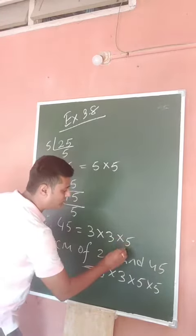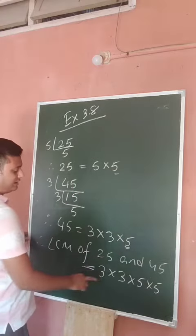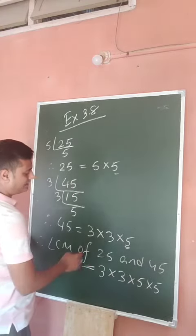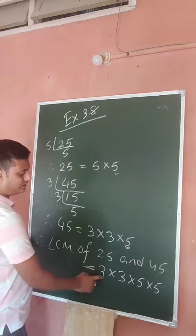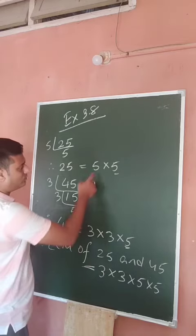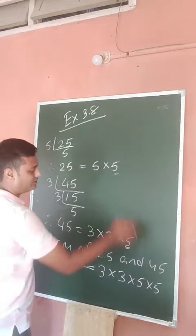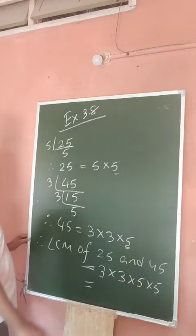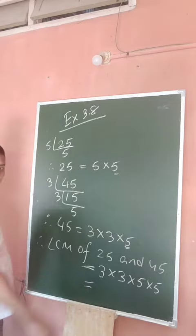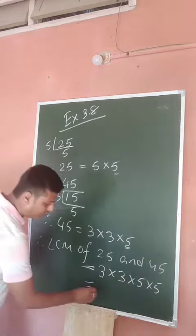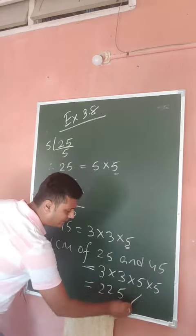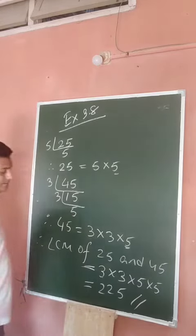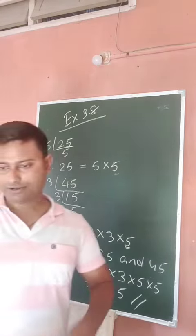So the common factors and remaining factors: 3 times 3 is 9, and 5 times 5 is 25. So the LCM will be 225. Okay, clear — I think all of you understand this one.